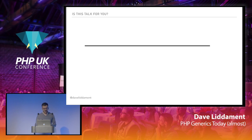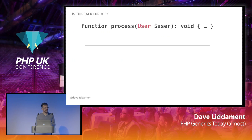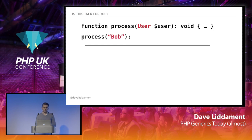I just want to make sure you're going to invest an hour of your time wisely. I've marked this as an intermediate talk. My assumed knowledge — my starting point — is that you understand the type declaration, the type hint in that method signature, that function signature for process. So you understand what the user is doing there, and you can see that if we use this code, there would be an issue.